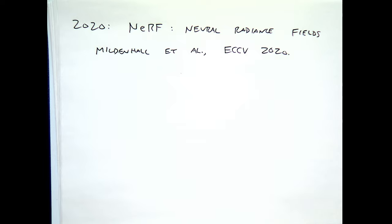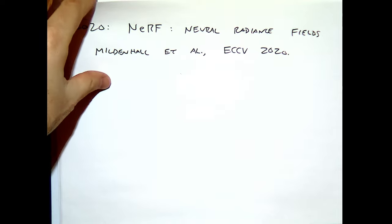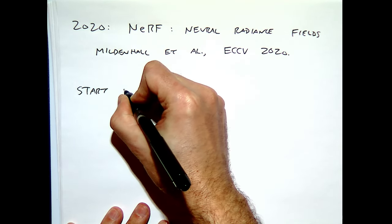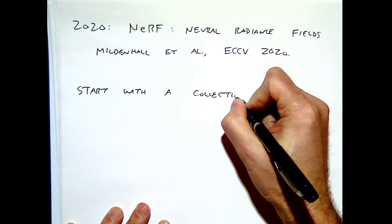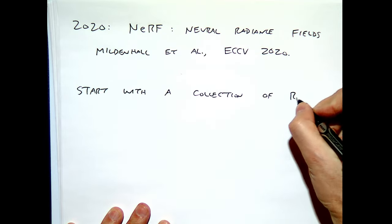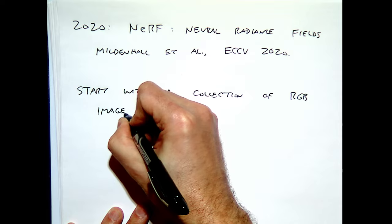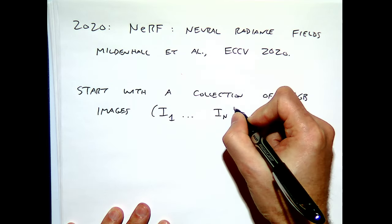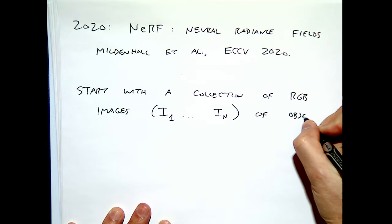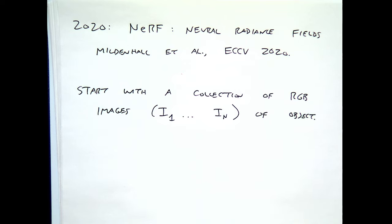We're going to create a 3D representation by taking an object or scene and looking at a bunch of images of it, then learning how to make an image of that scene from any other perspective. We start with a collection of RGB images I1 through IN of an object or scene. You could acquire these with your phone — many NERF algorithms are as simple as hitting record and moving around the scene, then sending it to an app that computes the NERF. That's what I want you to do in homework 5.